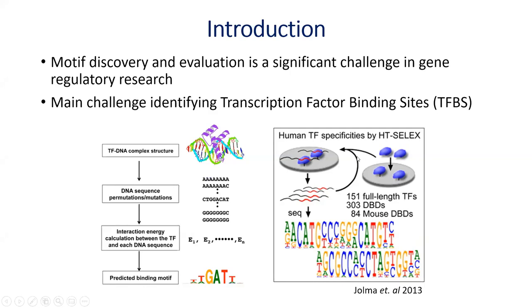There is ChIP-seq, which is the in vivo binding of the transcription factor to the motif. There is HT-SELEX, which is the in vitro method, and then there is protein binding microarray (PBM), which uses different data. Here is an example of HT-SELEX whereby we have the transcription factor binding to the genome. This sequence is then used and the binding energy is calculated. From that we can find the motif where the transcription factor binds.